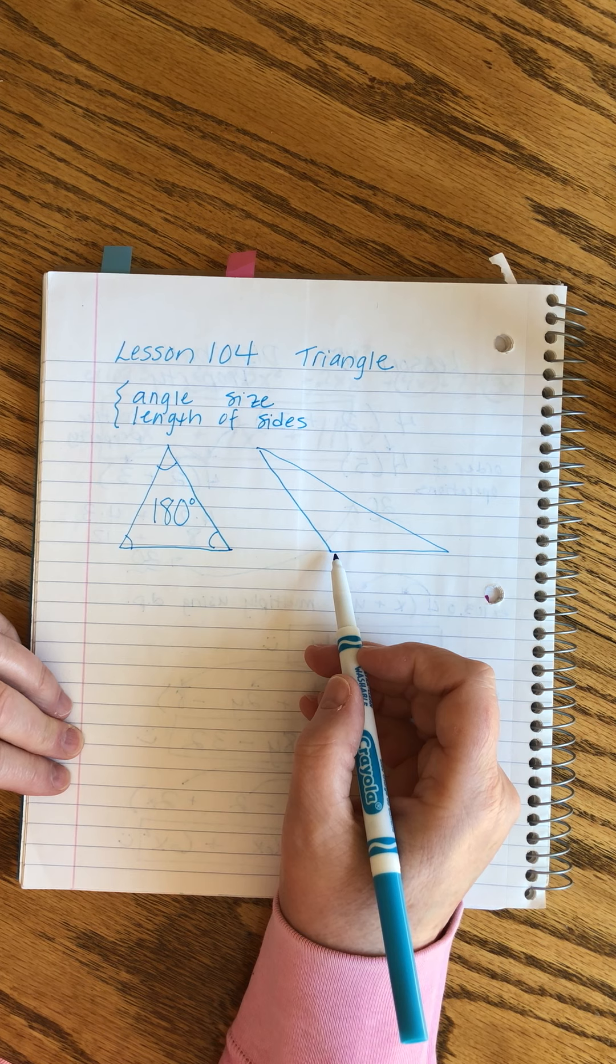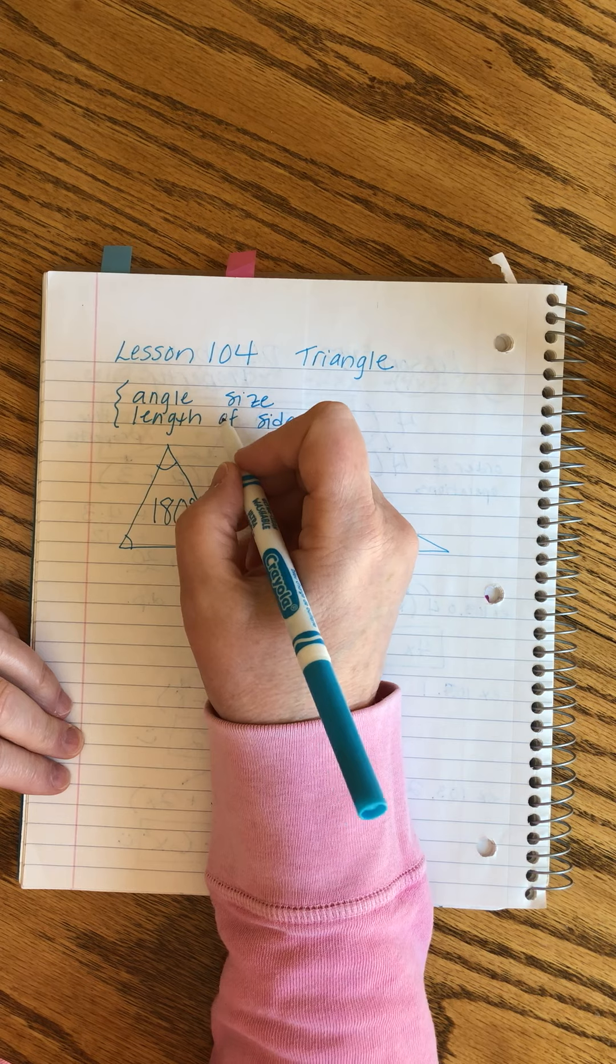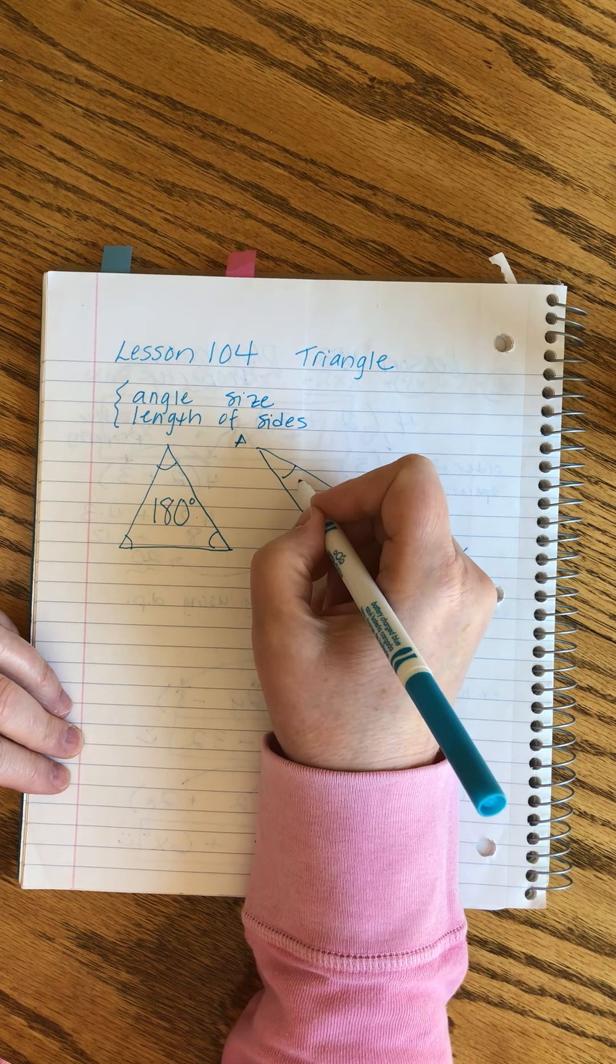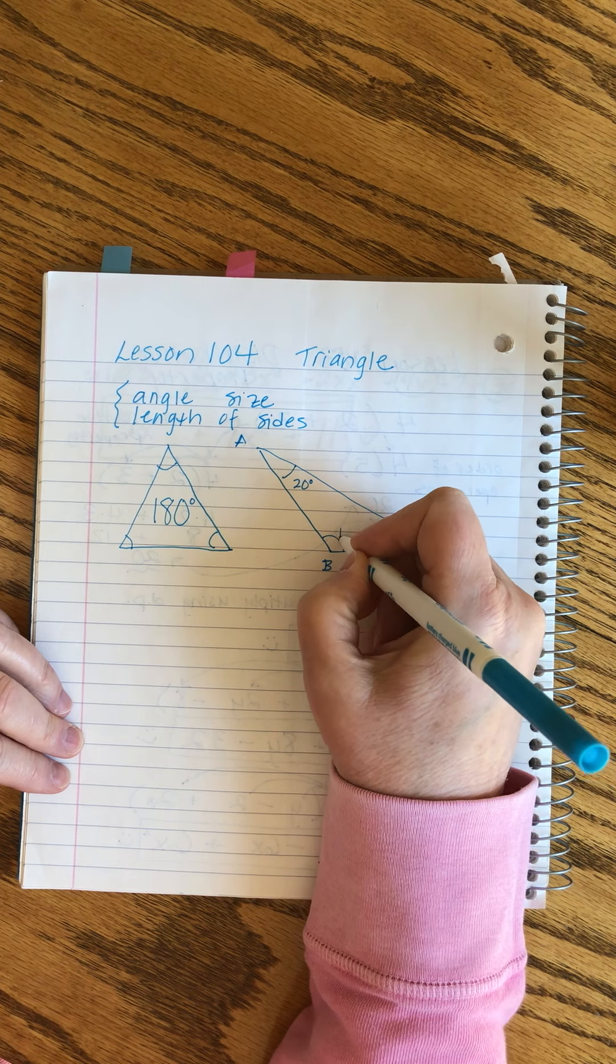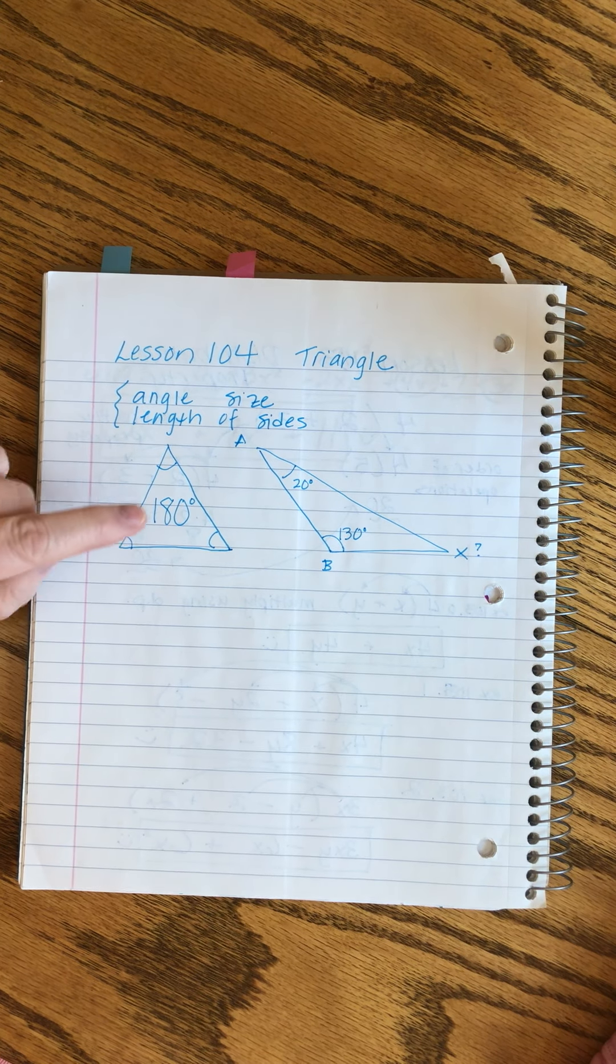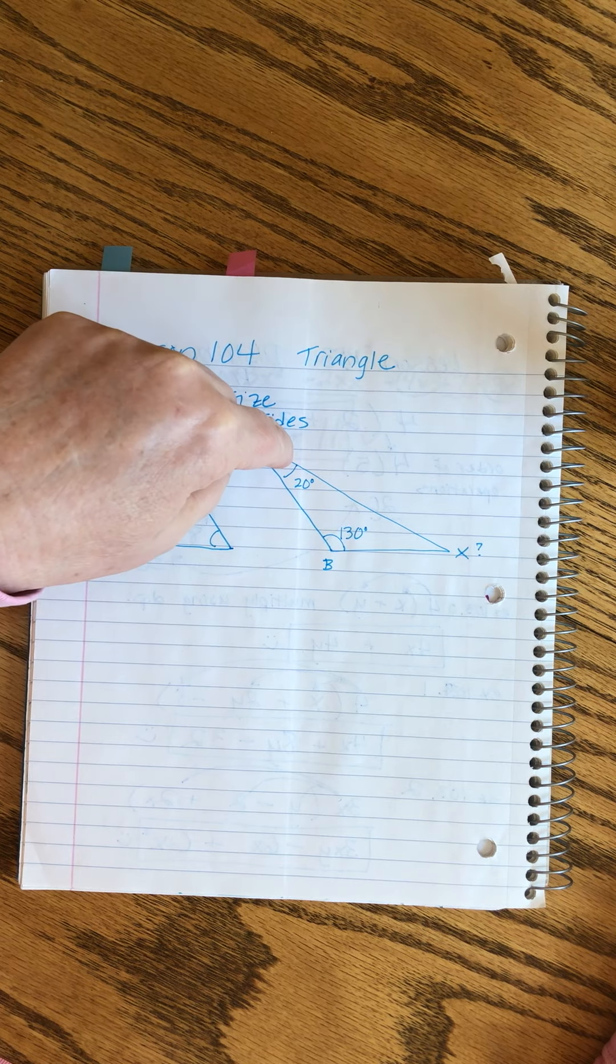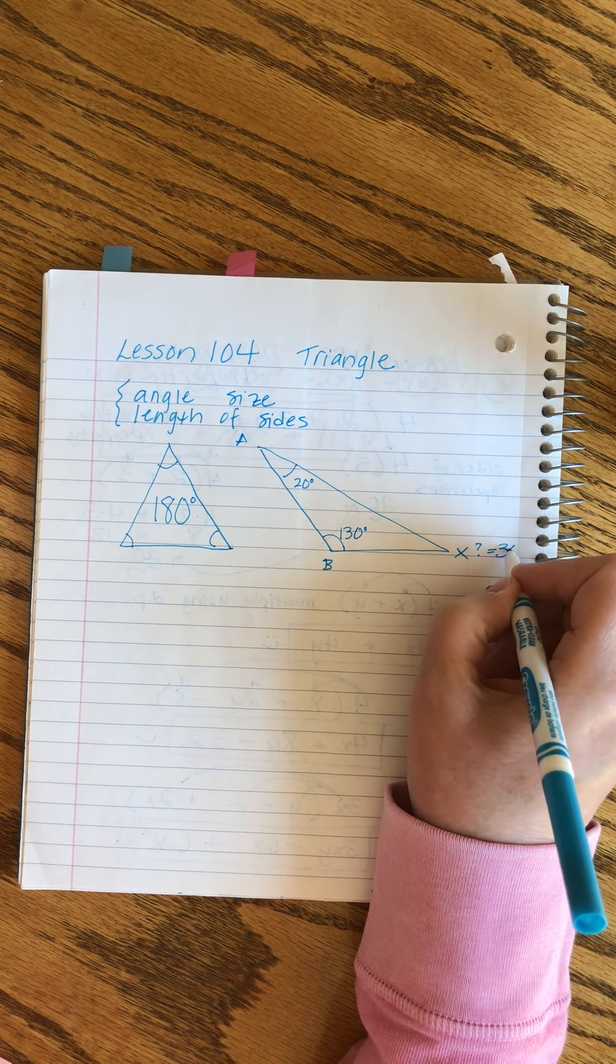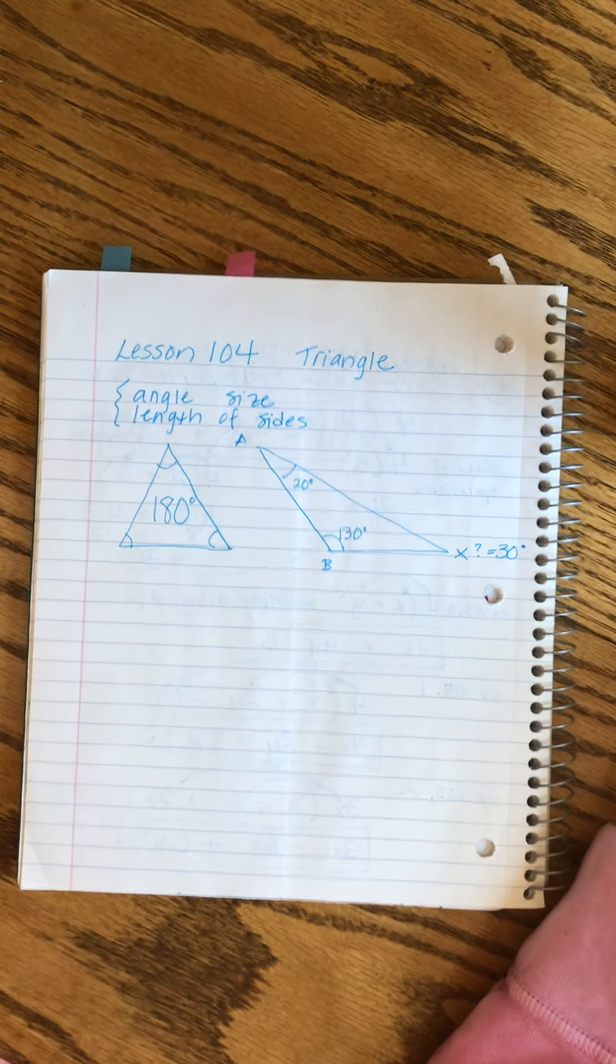For example, here's an obtuse triangle. We define the angles as A, B, and X. We're told that angle A is 20 degrees and angle B is 130, and we're asked, what's angle X? Easy - we know they have to add up to 180, so we subtract those two. Those two add to 150. 150 from 180 tells us that X has to equal 30 degrees.